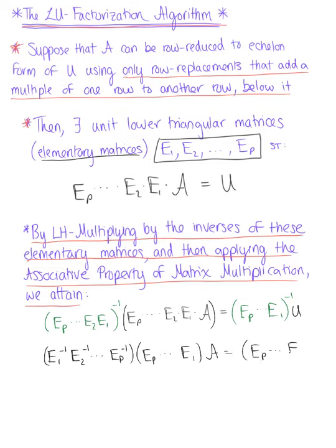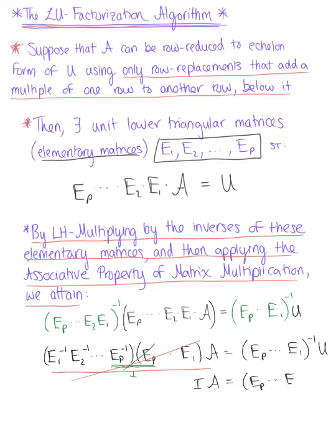On the left-hand side, we can see the elementary matrices canceling each other out. Each elementary matrix multiplied by its inverse goes to the identity, and this continues for all elementary matrices as we reduce. That whole left-hand side simply reduces to the identity matrix, so we have the identity matrix multiplied by matrix A equal to that inverse sequence of elementary matrices.